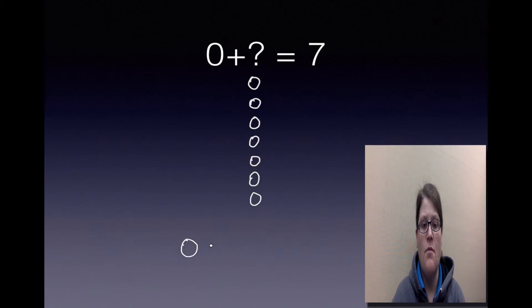So we have 0 plus... you remember, that's right, that's 7. But let's check and make sure: 1, 2, 3, 4, 5, 6, 7. Correct. 0 + 7 equals the sum of 7.